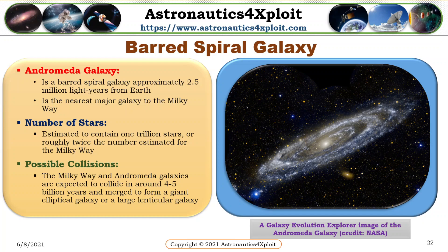The Andromeda galaxy is a barred spiral galaxy approximately 2.4 million light years from Earth. It is the nearest major galaxy to the Milky Way, estimated to contain 1 trillion stars, roughly twice the number estimated for the Milky Way. The Milky Way and Andromeda galaxies are expected to collide in around 4 to 5 billion years and merge to form a giant elliptical galaxy or a large lenticular galaxy. This picture shows a Galaxy Evolution Explorer image of the Andromeda galaxy.